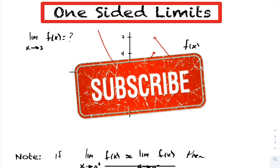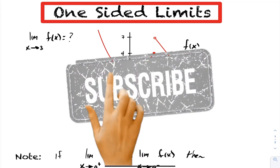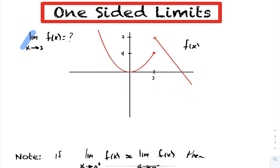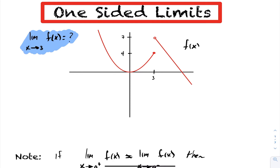In today's lesson, we're going to be looking at one-sided limits. So let's take a look at this question here. We want to find what is the limit as x goes to 3 of f at x. We have a problem here that wasn't in the previous questions we looked at.